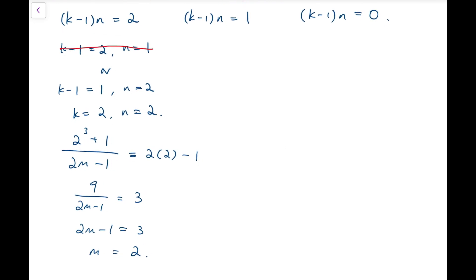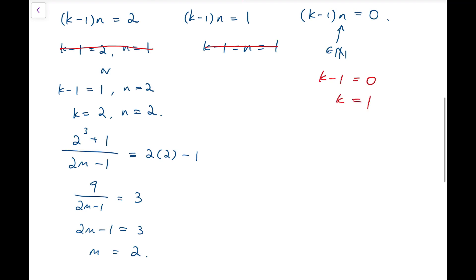For the middle case where the product equals 1, we must have k minus 1 equals 1 and n equals 1, but n equals 1 has already been solved so we ignore this. Finally, for k minus 1 times n equals 0: since n is a natural number it's never 0, so k minus 1 equals 0, meaning k equals 1.